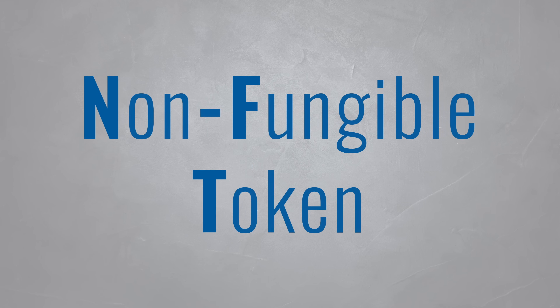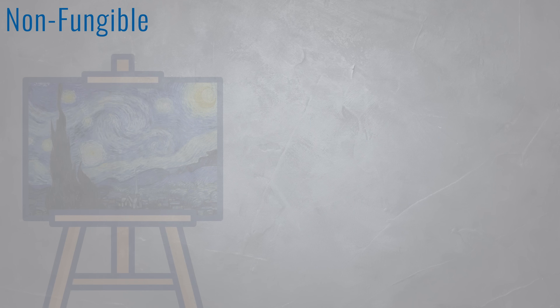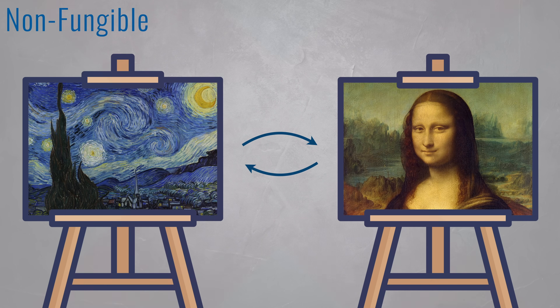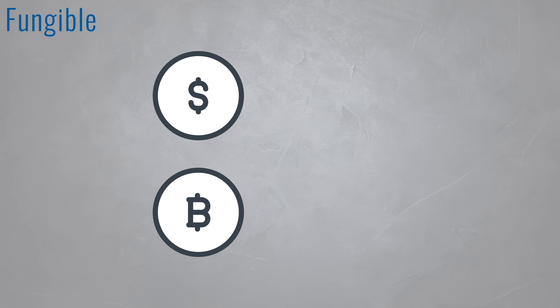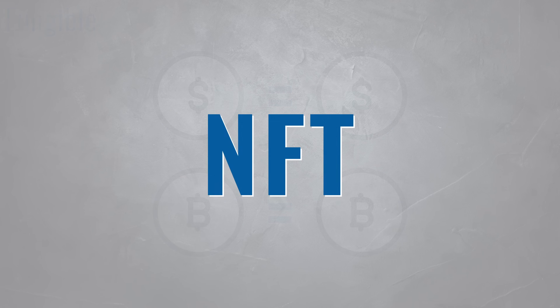NFT stands for non-fungible token. Non-fungible means that something cannot be exchanged for another item because it is unique. For instance, one piece of art is not equal to another — both have unique properties. Fungible items, on the other hand, can be exchanged for one another. For instance, one dollar or one bitcoin is always equal to another.